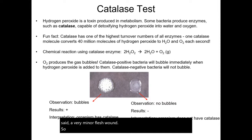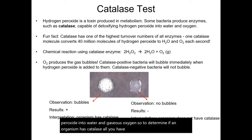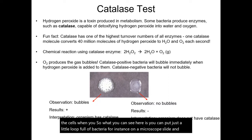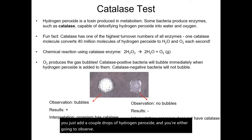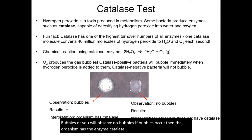The catalase enzyme can break down hydrogen peroxide into water and gaseous oxygen. To determine if an organism has catalase, all you have to do is add hydrogen peroxide to the cells. You can put a small loop of bacteria on a microscope slide, then add a couple drops of hydrogen peroxide, and you're either going to observe bubbles or no bubbles. If bubbles occur, then the organism has the enzyme catalase. If no bubbles form, then the organism does not have catalase.